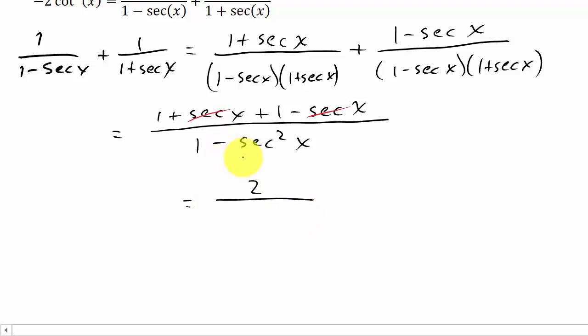Now let's look at this one minus secant squared x. Well, we've seen this in the other videos in case you haven't watched them. We know one plus tangent squared is equal to secant squared.